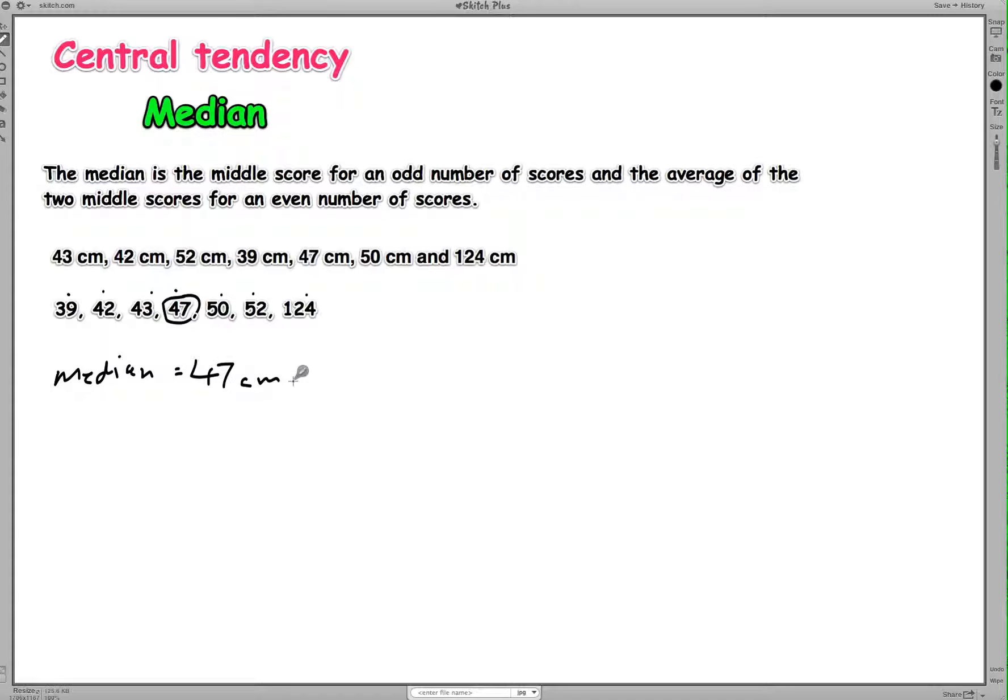So if we said to someone, we just went on a fishing trip and they asked, oh, how big of a fish you caught? We could say, well, you know, on average about 47 centimeters and we'd be accurate in saying that.